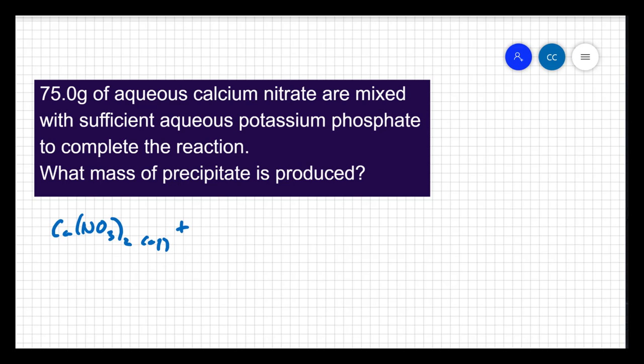Potassium has a one plus charge, phosphate has a minus three charge. So potassium phosphate is K3PO4.